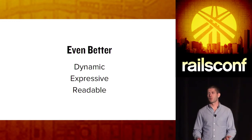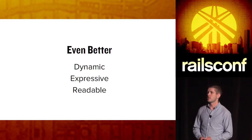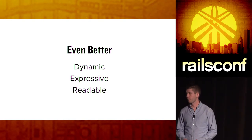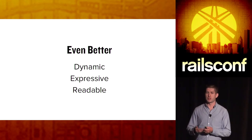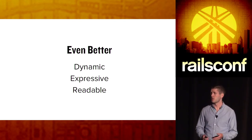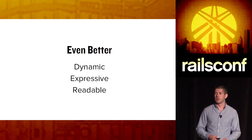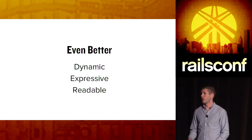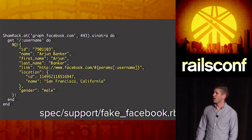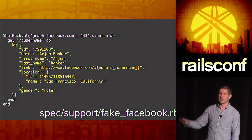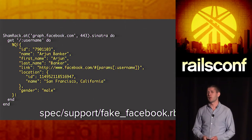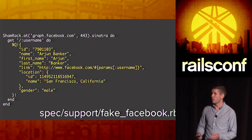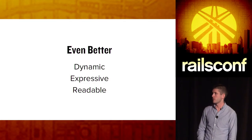So why is ShamRack better? I think there are a few reasons. First, I find it more dynamic and more expressive. You can add as much functionality as you need to test your integrations. You can back it with YAML if you need pre-population of real data. And it's also more readable — reading through the ShamRack fake is a lot easier to parse and you know where the API requests are being made, versus the WebMock stubbing in the first example which is a little harder to read.